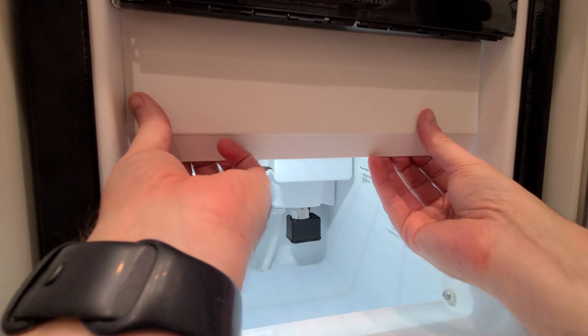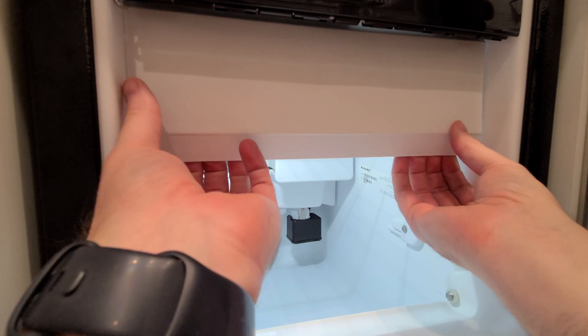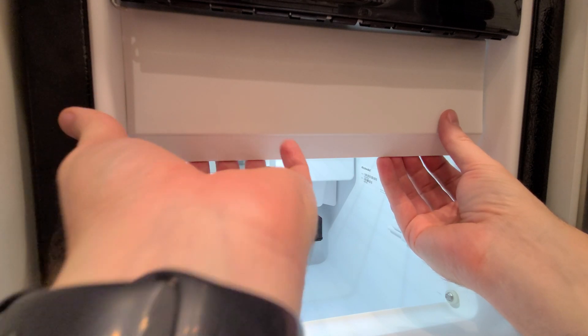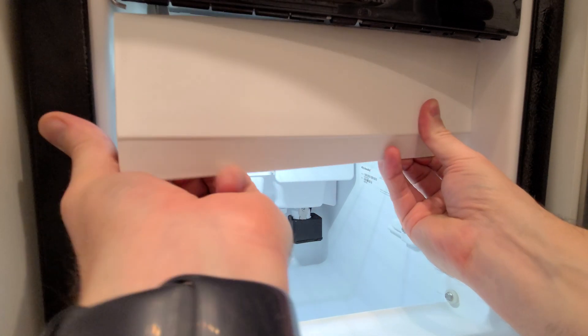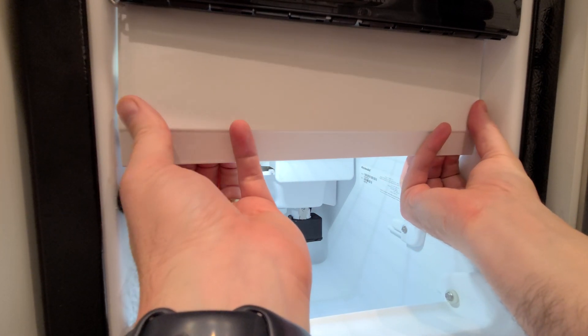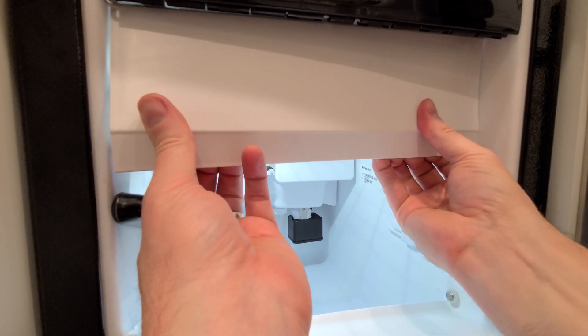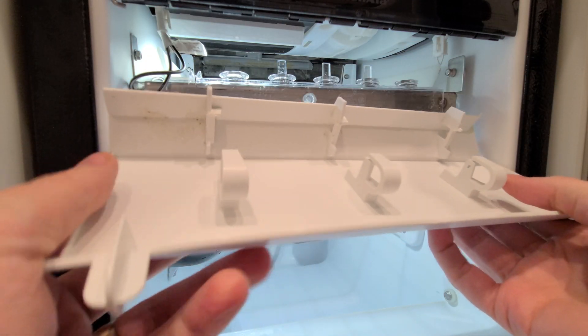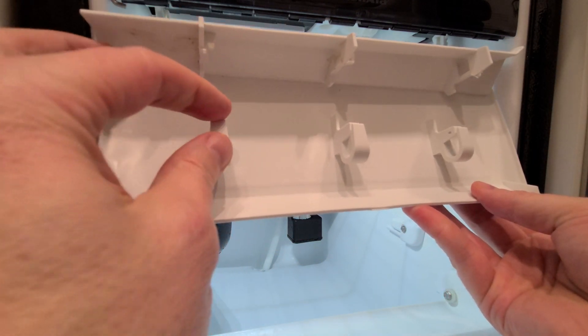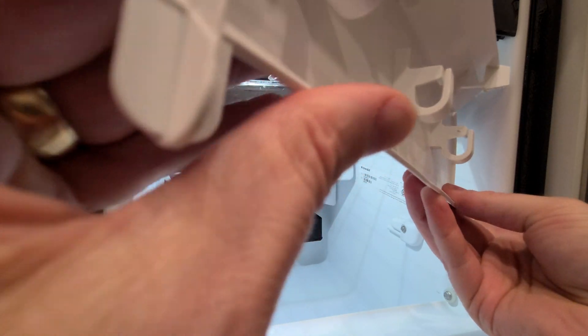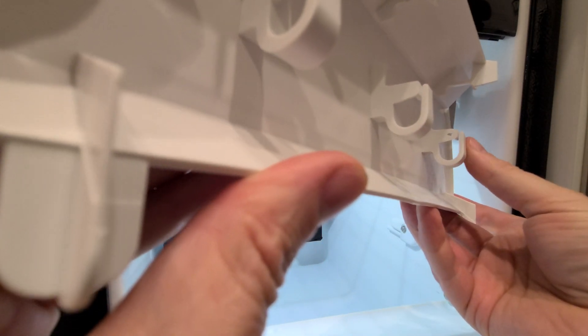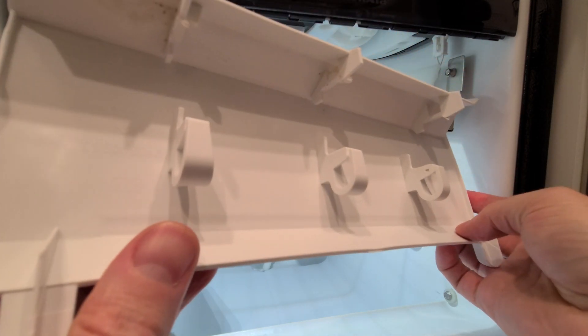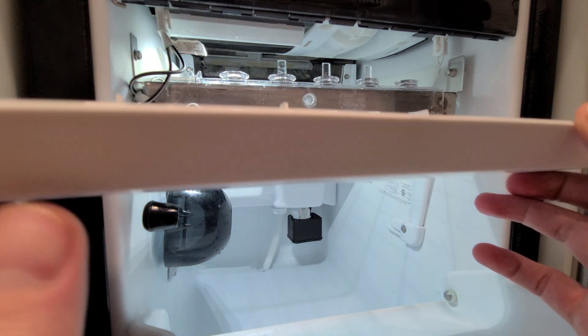The way that you do this is you just pull this. It takes a little second. There we go. Pull it straight forward. And there it goes. On the back, you can see these are some little tabs, little guards that snap right on. And so just pulling that straight back will remove that.